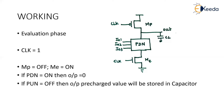If the inputs are arranged such that the pull-down network is off, there is no path to discharge from the output to ground. Even though ME is on, the PDN is off, so the path is broken. In that case, the output retains the pre-charged value, which is stored in the capacitor.